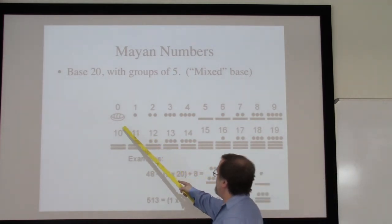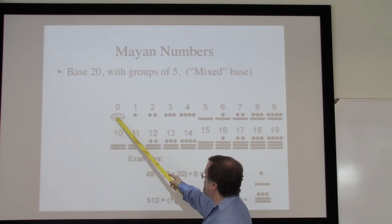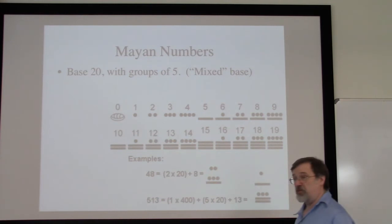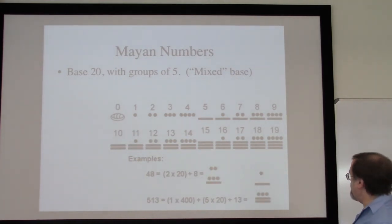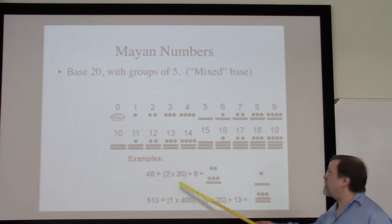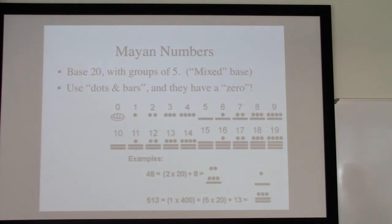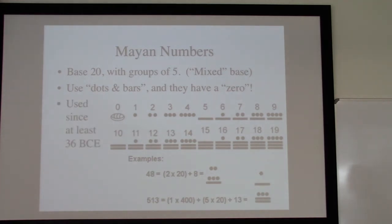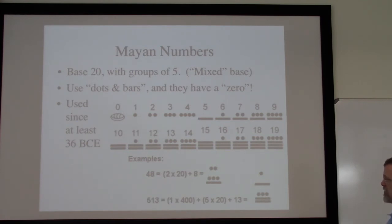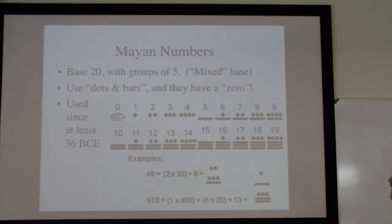The Mayans are also the first people in the world that we know of to actually use a symbol for zero. This is a seashell — presumably an empty seashell with nothing left inside — to represent that zero. We have a real, honest-to-goodness zero symbol, the first one in the world. This system dates back to at least 36 BCE. The conjecture, based on other evidence, is that it might date back to about 400 BCE, but the earliest known instance on a rock stela comes from 36 BCE.